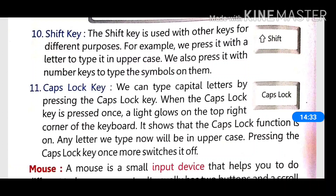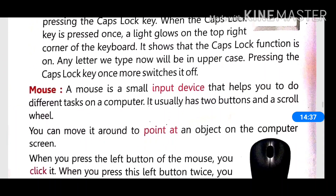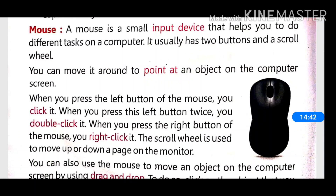The mouse helps you to perform different tasks on a computer. It usually has two buttons and a scroll wheel. All of us know the mouse is an input device — it is a small input device with which we do a lot of work on the computer. The mouse has a left button and a right button. When we move the mouse, we see an arrow on the screen which we also call the pointer, and the pointer moves according to our movement.